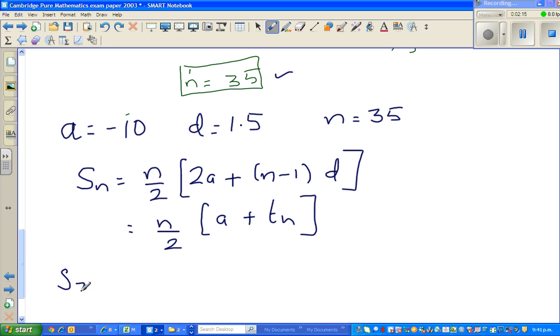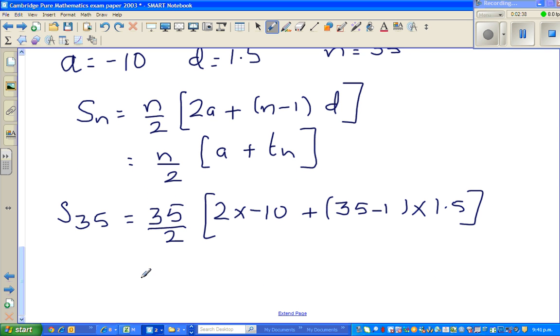So we want to find s35. I'm just using this formula. That is 35 divided by 2 times 2 times a, which is negative 10, plus n is 35, so that is 35 minus 1 times 1.5. Let us simplify this a little. This is 35 divided by 2, which is 17.5. 34 divided by 2 is 17. So this is 17.5 times negative 20 plus 34 times 1.5.